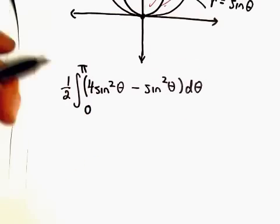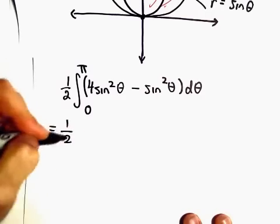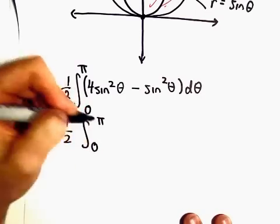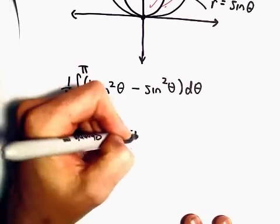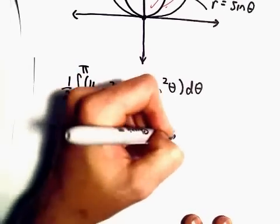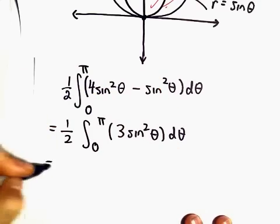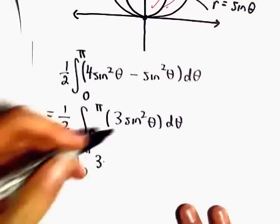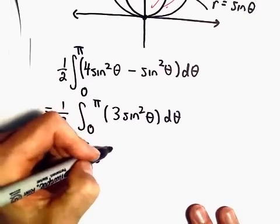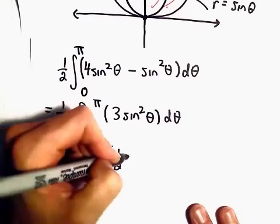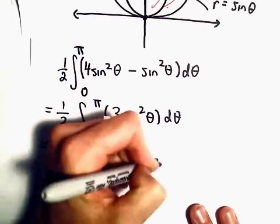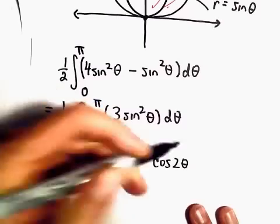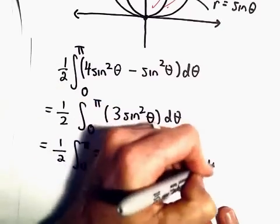So now we can compute this. Let's see, that's going to be 1 half the integral from 0 to pi of 3 sine squared theta. Well, here we're going to have to use our trig identity. So there's our 3. The identity we'll use for sine squared theta. Recall it's 1 half 1 minus cosine of 2 theta d theta.